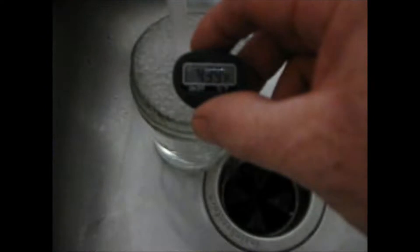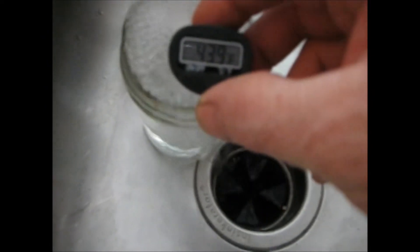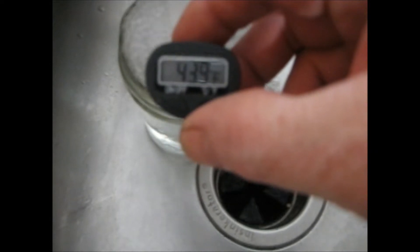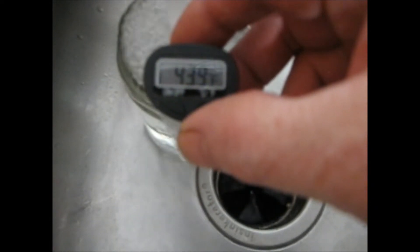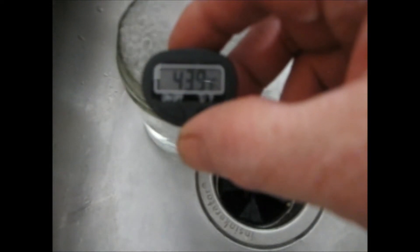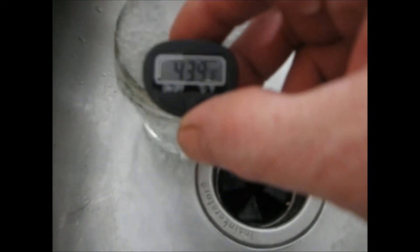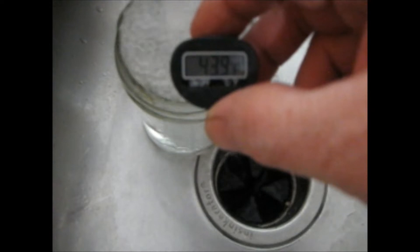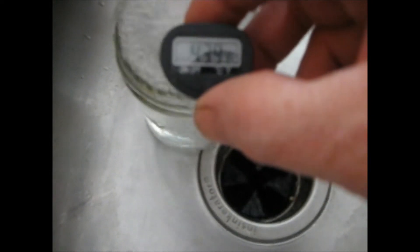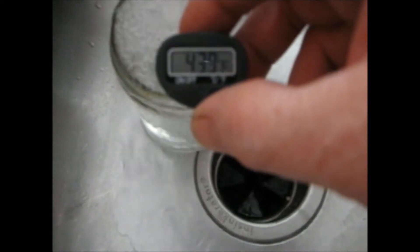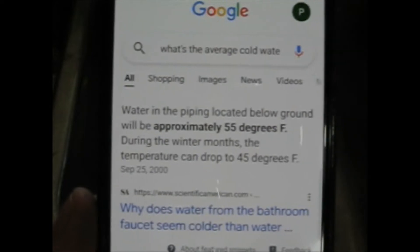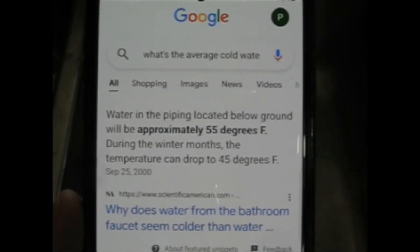So to get a baseline I'm running the water into this jar. Our water temperature coming into the house, well at least coming up here to this sink faucet, is 43.9 degrees, so basically 44 degrees. And that's going to be a lot colder than most people have coming into their homes and that's one of the challenges I have in trying to heat my water.